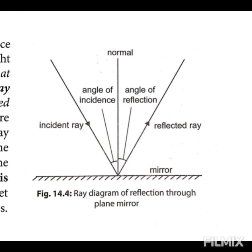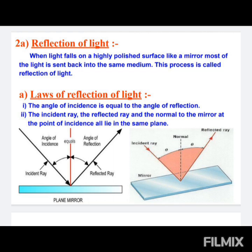Based on these, there are two laws of reflection of light. The first law of reflection states that the incident ray, the normal, and the reflected ray all lie on the same plane. The second law says that the angle of incidence is always equal to the angle of reflection. So if the angle of incidence is 60 degrees, the angle of reflection will also be 60 degrees.